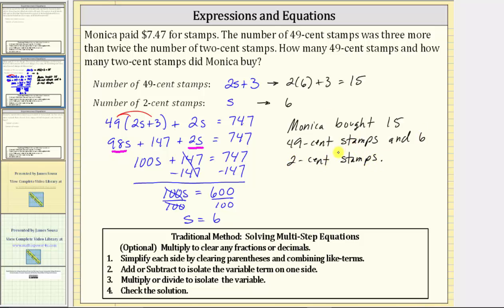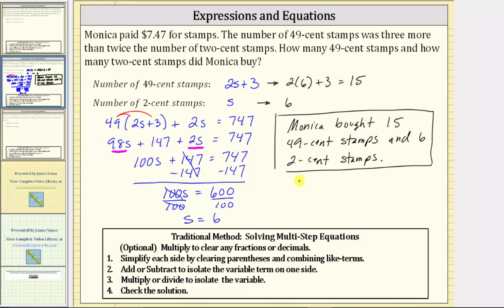Before we go, let's check our answer by making sure that 15 49-cent stamps and 6 2-cent stamps gives a value of $7.47 or 747 cents. So 49 cents times 15 plus 2 cents times 6 must equal 747 cents. 49 times 15 equals 735.